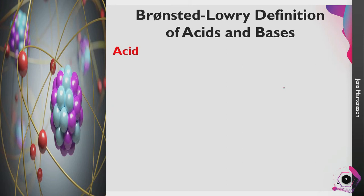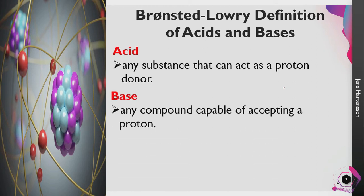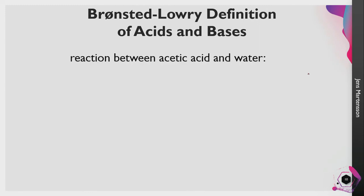According to the Bronsted-Lowry definition of acids and bases, an acid is any substance that can act as a proton donor, while a base is any compound or substance capable of accepting a proton. So the acid is the one that donates a proton, while the base is the one that accepts a proton. Again, when we talk about a proton here, we are referring to the hydrogen ion.